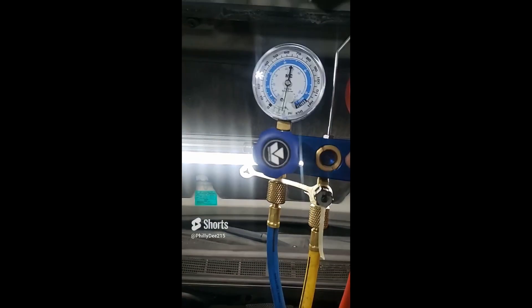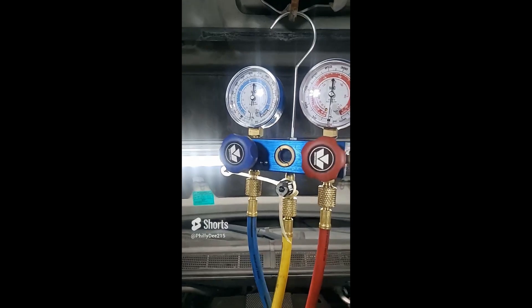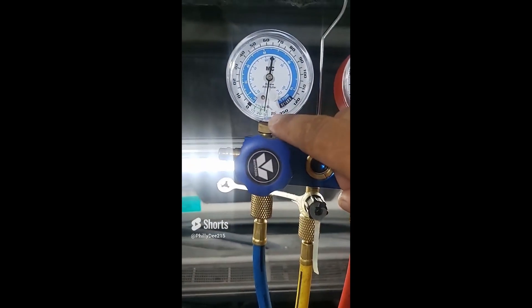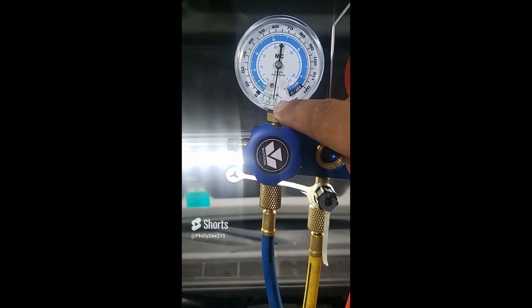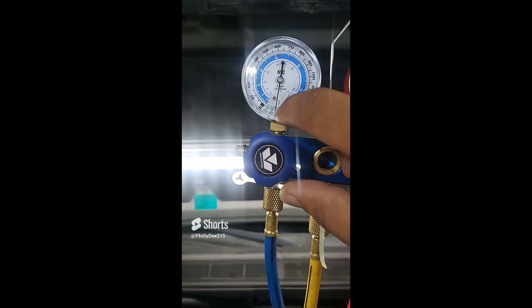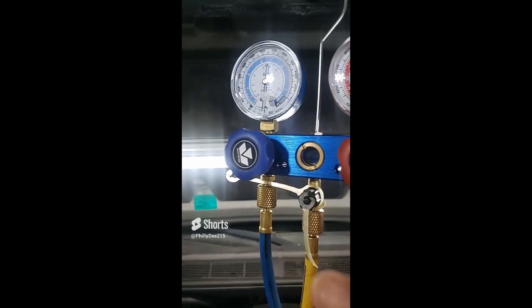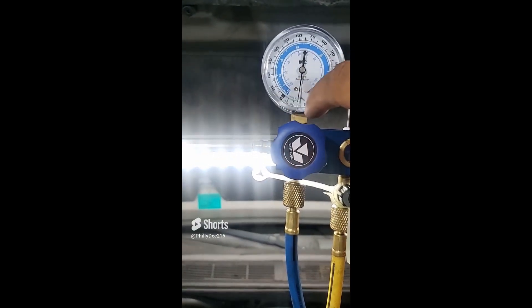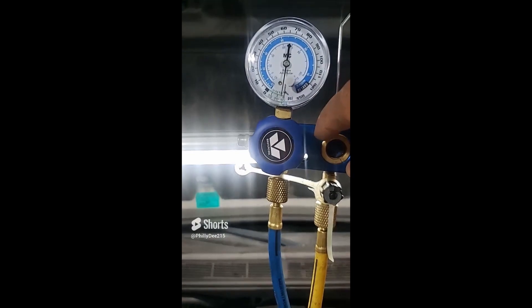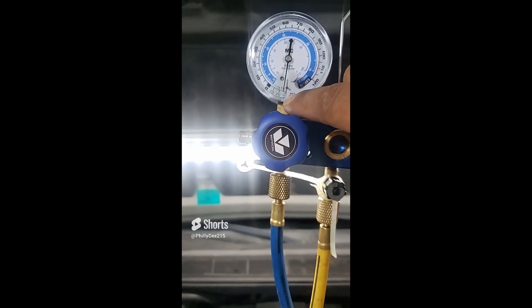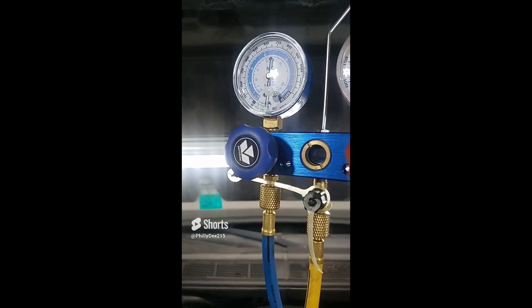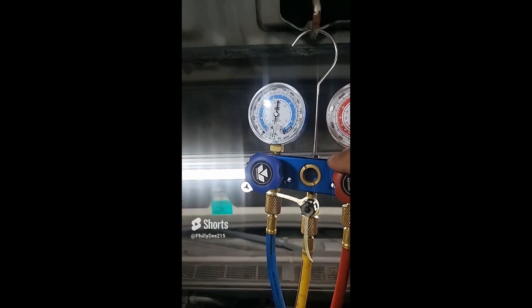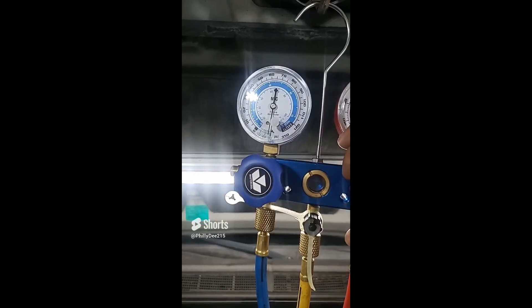You also want to vacuum your system out to confirm that there's no leaks in the system. So once you get your system vacuumed down to 28 to 30 inches of mercury, you let it sit before you open up any of the valves. You just let it sit because if it drains back down, if it goes back this way, that means you have a leak. If it's still sitting there, that means you don't have a leak. So you want to make sure you don't have moisture in your system, and you also want to make sure your system doesn't have a leak.